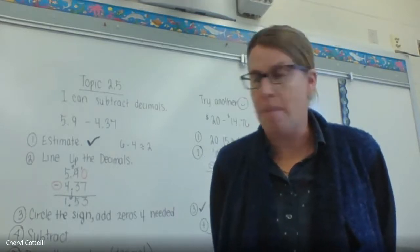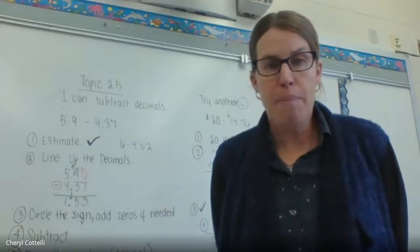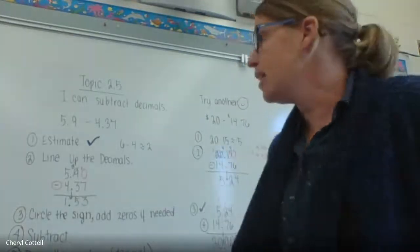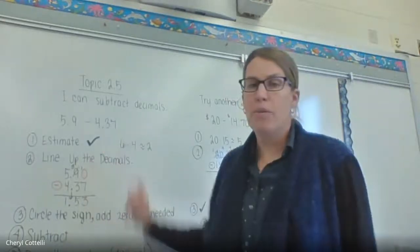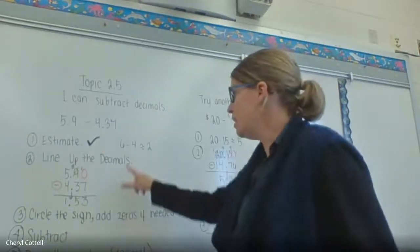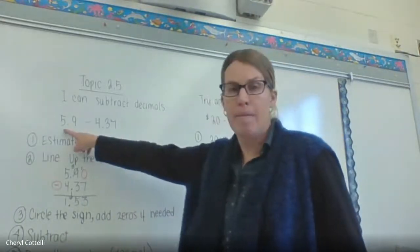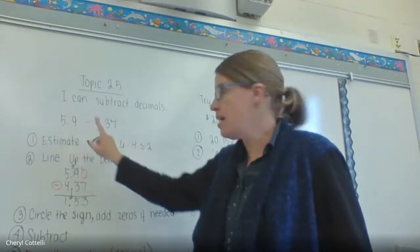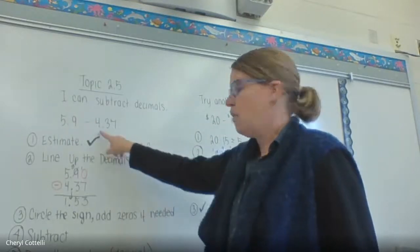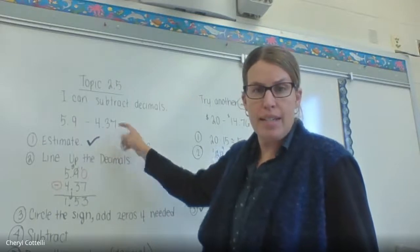I have it step by step on what you're going to do. The first step is you're going to estimate, and this is a way for us to check our answer. So we can just round it to the whole number. So 5.9 rounds to 6, and 4.37, think of four dollars and thirty-seven cents, we have close to four dollars.